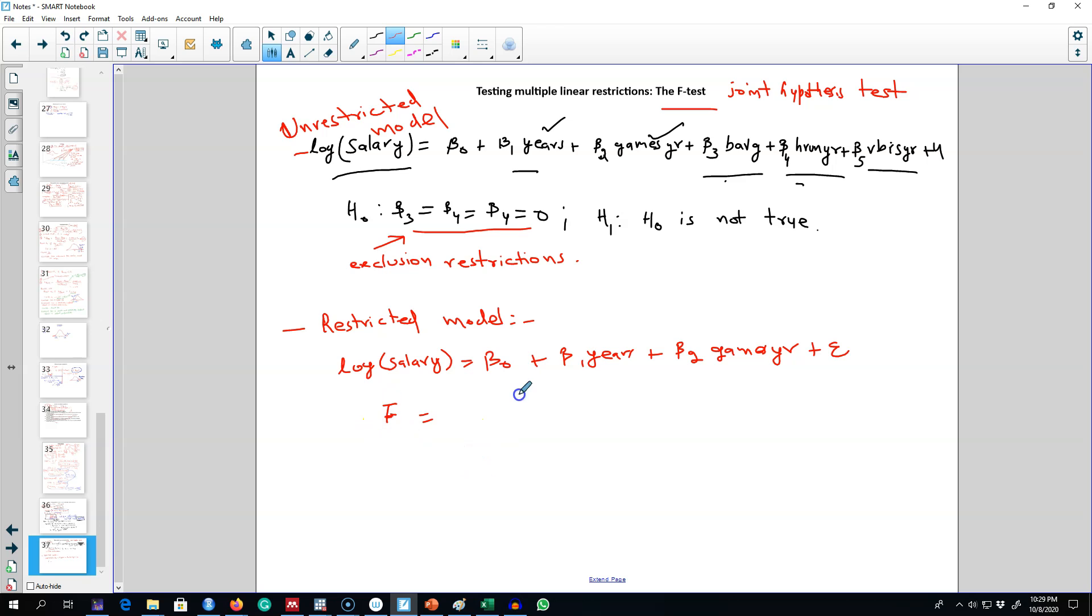We are going to get our F-test value based on the sum of squared residuals from the restricted model minus sum of squared residuals from the unrestricted model, divided by the number of restrictions, which in our case is 3, and we are going to divide it by sum of squared unrestricted divided by degrees of freedom from the unrestricted model.